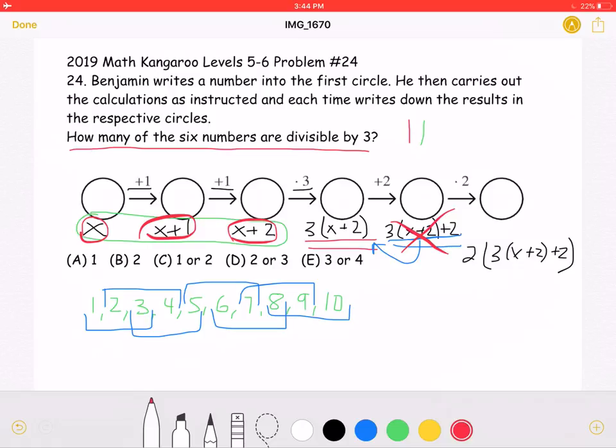And then for the final number, it's 2 times the previous number. If you multiply a number that's not divisible by 3 by 2, you wouldn't get a multiple of 3. So that one's also not divisible by 3.